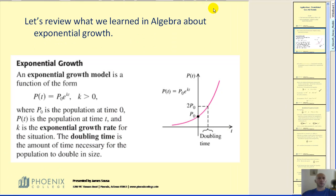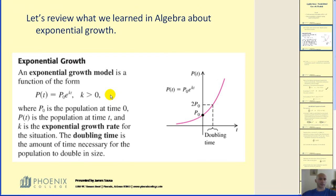Let's review what we've learned in algebra about exponential growth. An exponential growth model is a function of the form P(t) equals P₀ times e to the power of kt, where k is greater than zero. P₀, or P sub zero, is the population at time zero. P(t) is the population at time t, and k is the exponential growth rate for the situation. Doubling time is the amount of time necessary for the population to double in size.